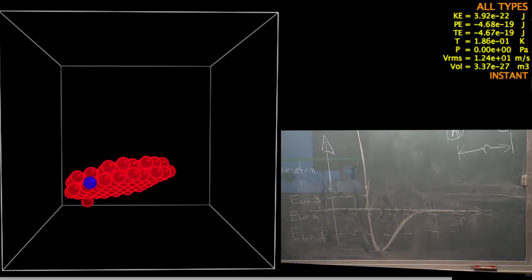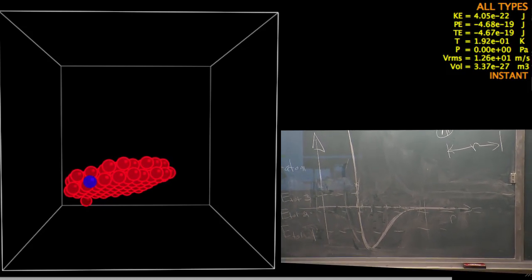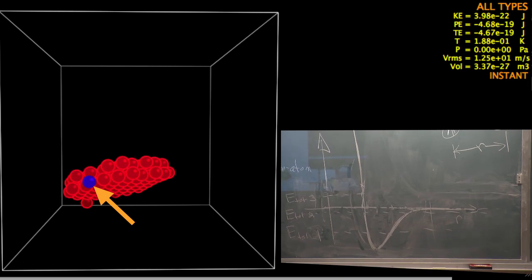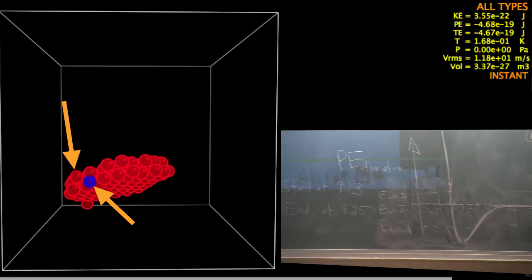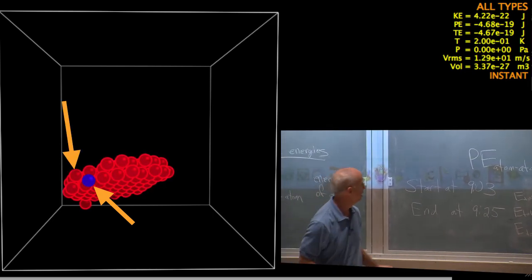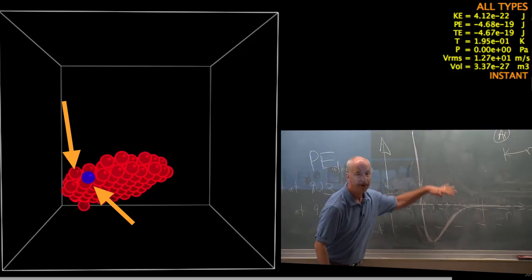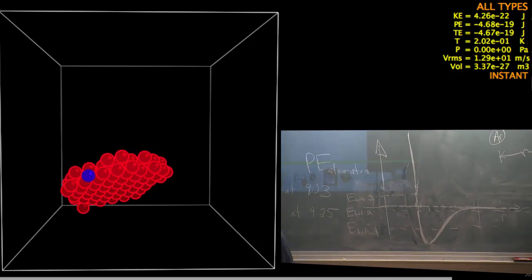Now, some of these atoms, like this one blue one here, and this one red one right here, those are close together. The ones that are close together, distances something like this, have a significant potential energy of interaction.